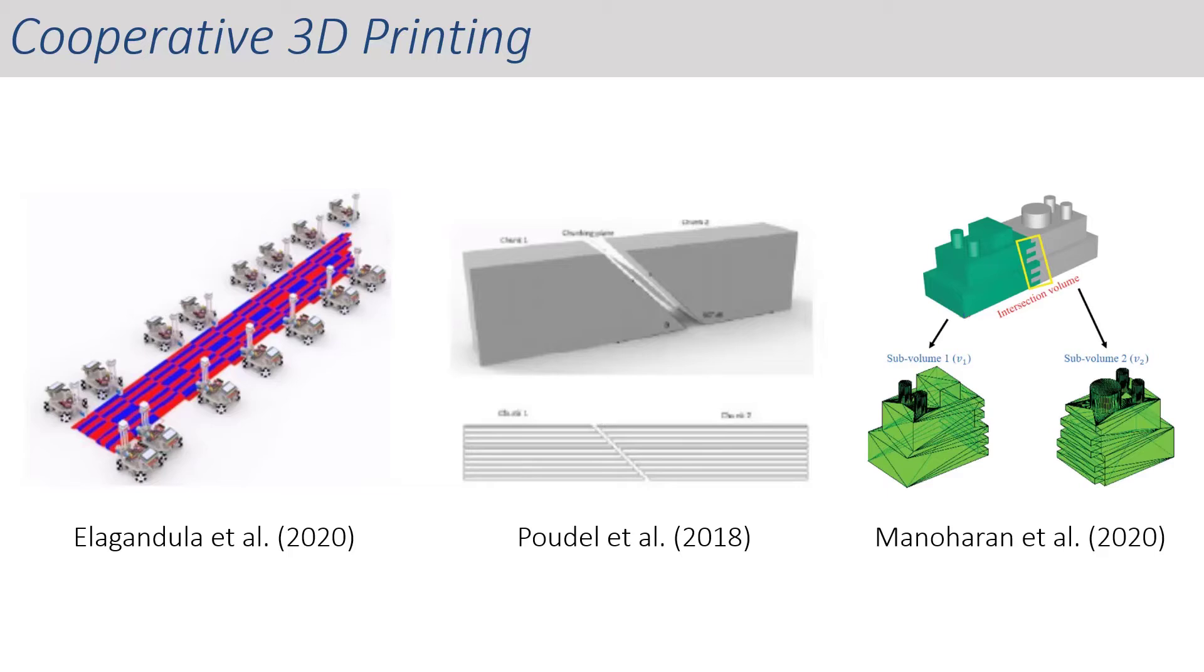Other approaches employ the principle of interlocking to partition the part into multiple sub-volumes. However, the complexity of interfacial geometry typically either requires involved path planning algorithms or complicated communication protocols between multiple robots.